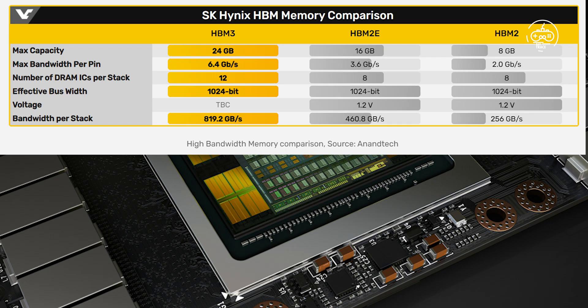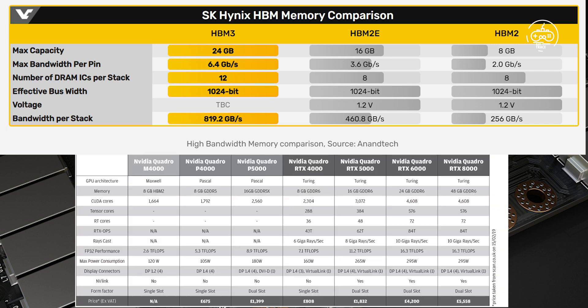HBM2 is a space-efficient option with a compact form factor that can ideally fit in systems with limited space but greater demands for speed and performance. If quicker speeds are important to you, GDDR6 may be preferable. While HBM2 can deliver rates of up to 650 gigabits per second, GDDR6 with a 384-bit interface can deliver speeds of up to 960 gigabits per second.